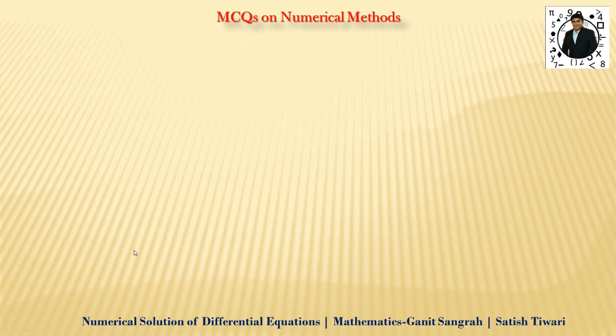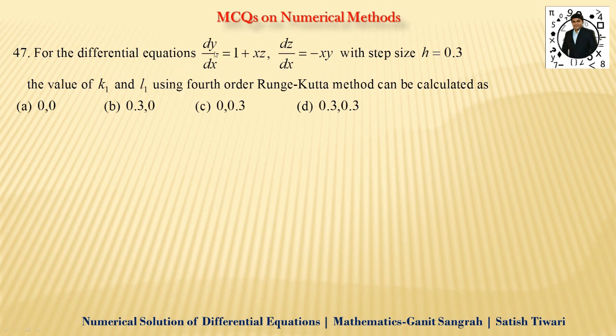Then uske baad chalte hai this question number 47 pe par. For the differential equation dy/dx equals to 1 plus xz and dz/dx equals to minus xy with a step size h equals to 0.3. The value of k1 and l1 using the Runge-Kutta method of, it is what, fourth order. Woh humko yahan pe use karna hai. Toh ekdam simple hai ki formula aapko bas pata hona chahiye. K1 ka formula hota it is h into f of x0 comma y0 comma it is what, z0. Or l1 ka formula that is what, h into g of x0 comma y0 comma it is what, z0. Ab f kya leta hai yeh? Yeh wala jo pehla equation hai yeh mera f ho jayega. G kya ho jayega? Yeh quantity. Yeh meri f hai, yeh meri g hogi.